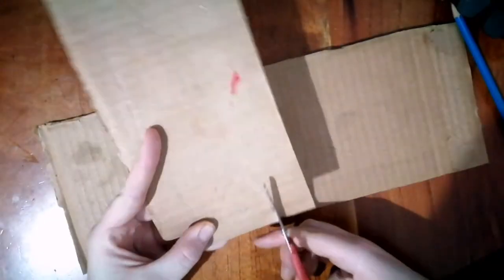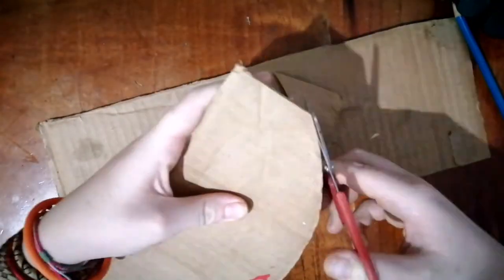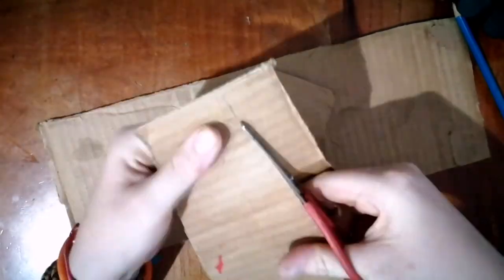You want to start by drawing out a wing with about a 2cm tab on the end which you'll fold over and use to connect it to the body.